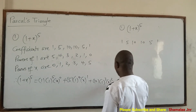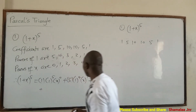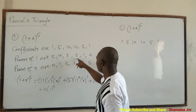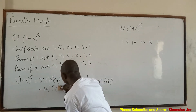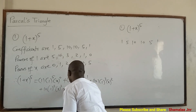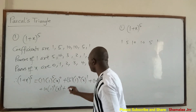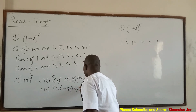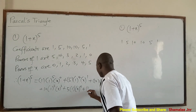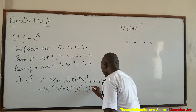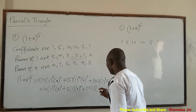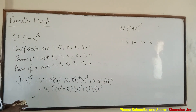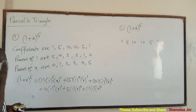Continuing: the next term has coefficient 10, power of 1 is 2, power of x is 3. Then coefficient 5, power of 1 is 1, power of x is 4. And the last term has coefficient 1, power of 1 is 0, and power of x is 5. Now let's take our time to expand everything.